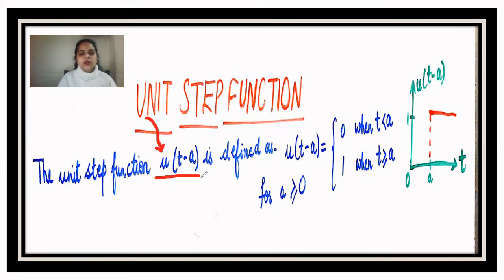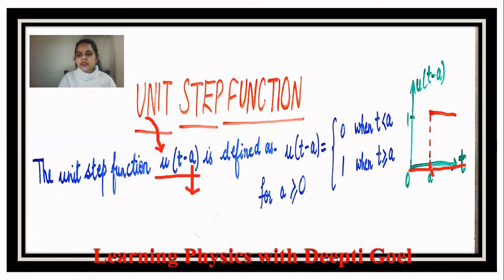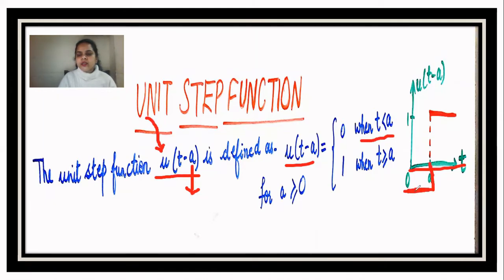The function is defined as u(t - a). Why is it defined as t minus a and not simply u(t)? Because at the point a there is a step. Looking at the graph, with the t-axis and the point a on it, we observe that when t is less than a, the function u(t - a) is zero, and when t is greater than or equal to a, u(t - a) takes the value one.